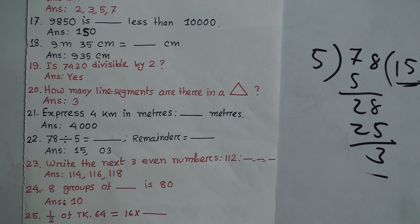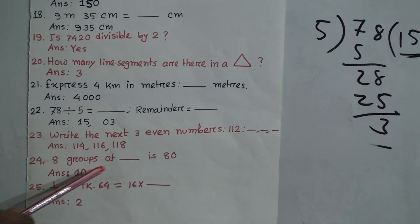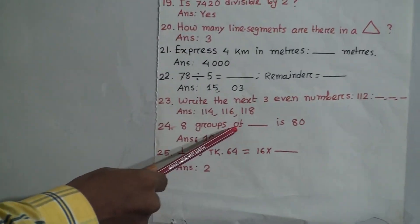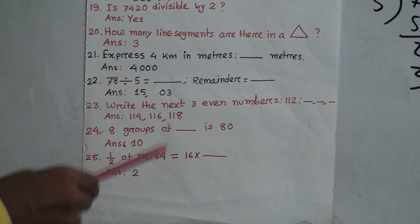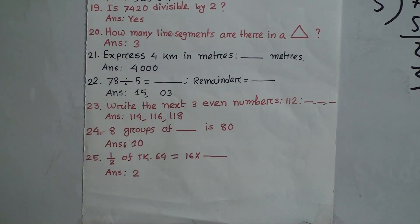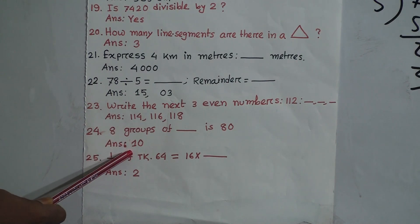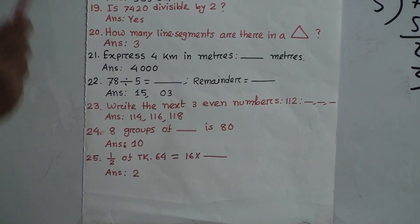Question 24: 8 groups of dash is 80. Since 8 × 10 = 80, the missing number is 10. So 8 groups of 10 is 80. Our answer is 10.